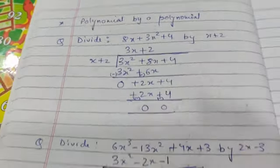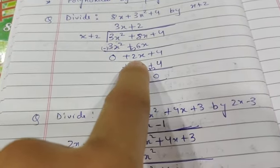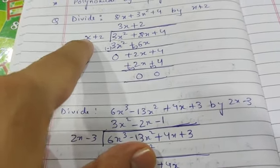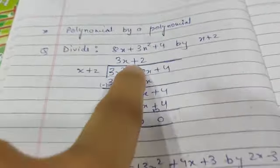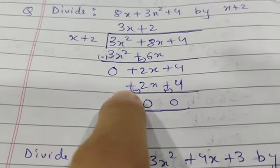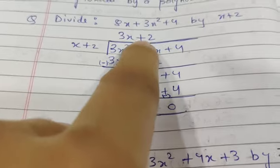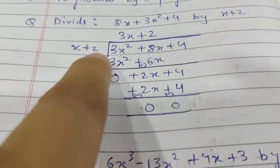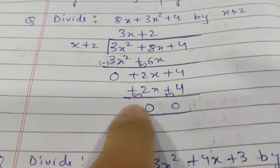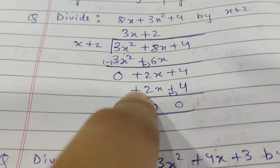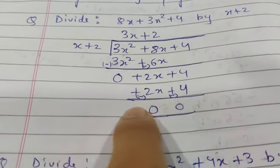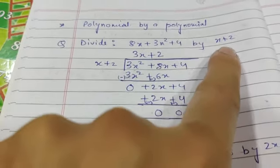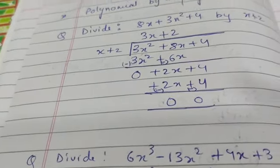Now our target is 2x. We have x here, so we multiply by 2. 2 into x plus 2 equals 2x plus 4. Sign change and subtract: 2x and 2x cancel, 4 and 4 cancel, giving us 0. The answer is 3x plus 2.